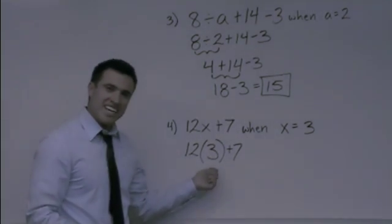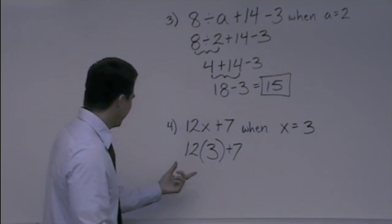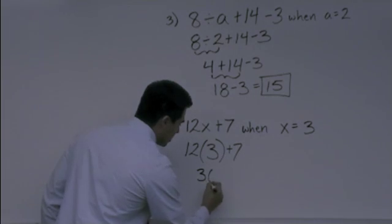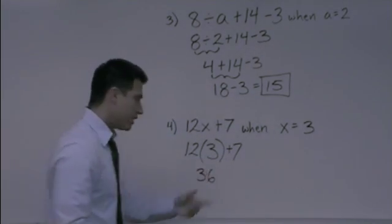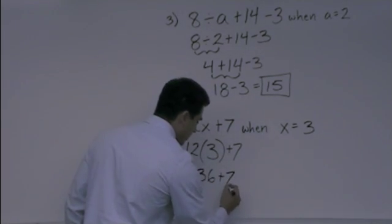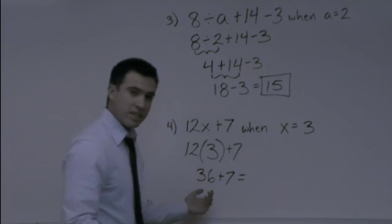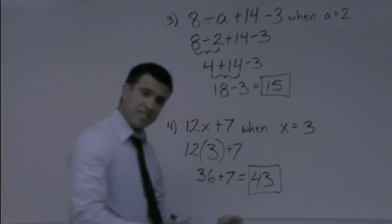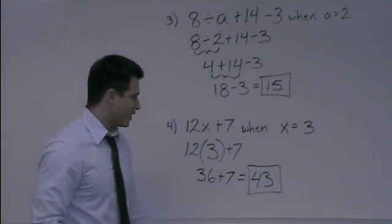12 times 3, Aunt Sally I'm teaching right now, plus 7. So we have 36 because 12 times 3 is 36 plus 7 and that will give us 43 for our answer. And let me go ahead and box that. Aunt Sally can you see that okay? Yeah. Great.